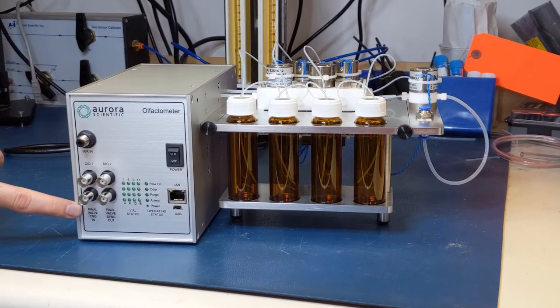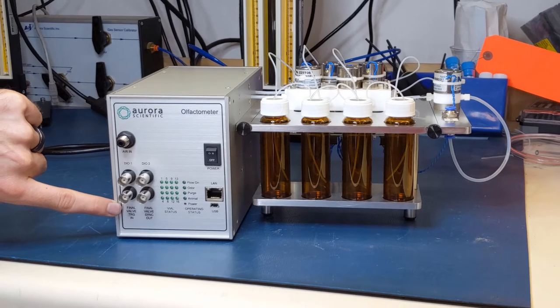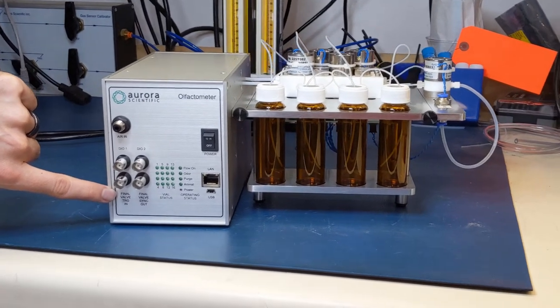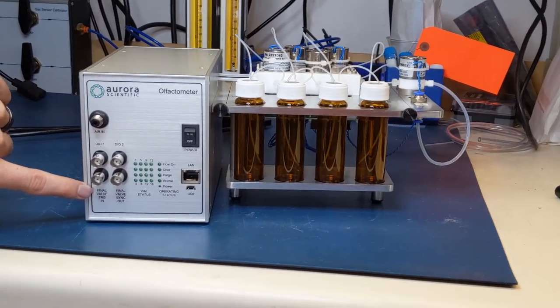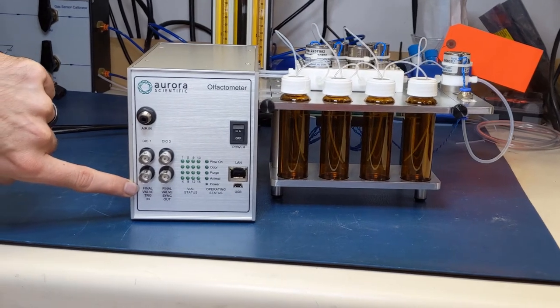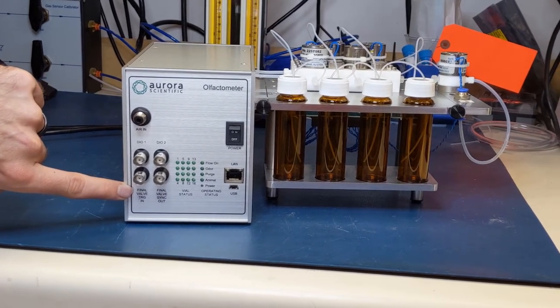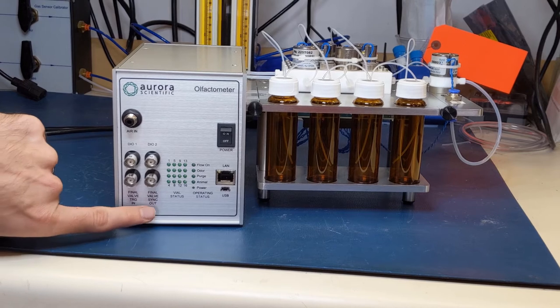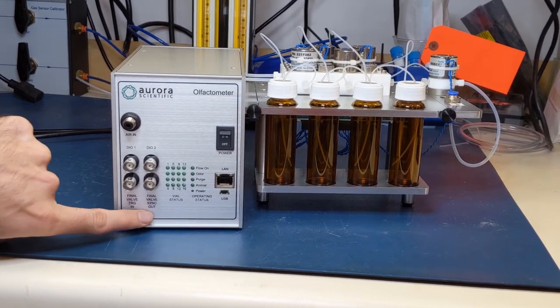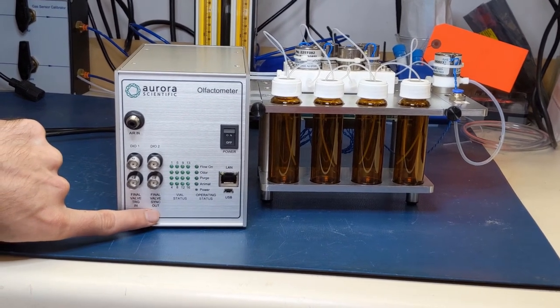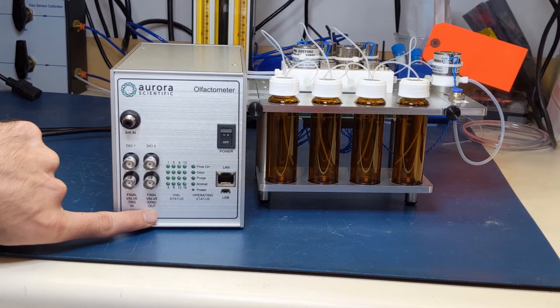Below that is final valve trigger in, which takes an externally delivered TTL signal to trigger the opening or closing of the final valve, where high opens the valve and flows the odor into the animal, and low closes the valve and flows the odor to exhaust. Next to it is final valve sync out, which generates a signal corresponding to the final valve status, where high is open and low is closed.